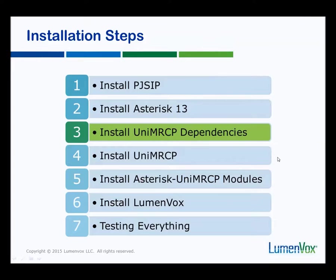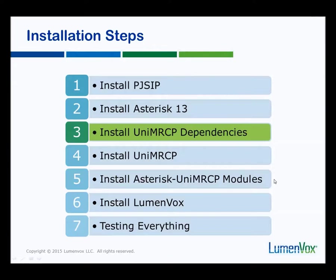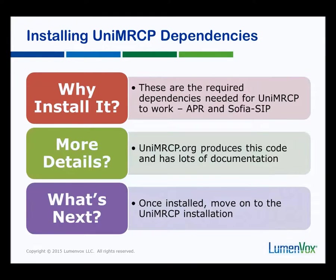Some of the confusion comes between the difference between steps four and five: UniMRCP and the Asterisk UniMRCP modules. People often confuse what these things are. UniMRCP is the UniMRCP client — that is the thing that knows how to talk MRCP. The Asterisk UniMRCP modules are the modules built for Asterisk to communicate with UniMRCP — basically how UniMRCP talks to Asterisk. Hopefully we'll make that clear as we go through things, but there are three distinct steps regarding UniMRCP that need to be done.